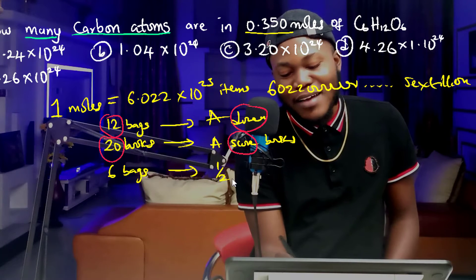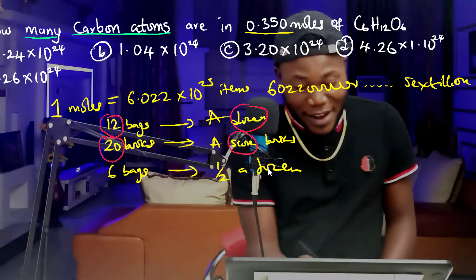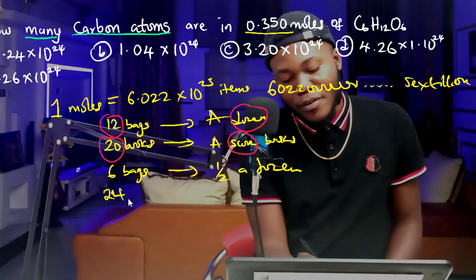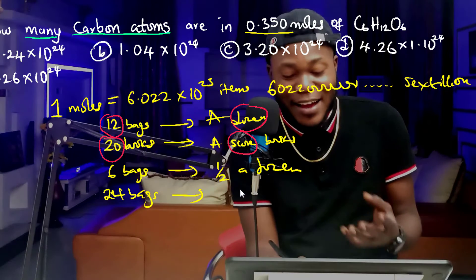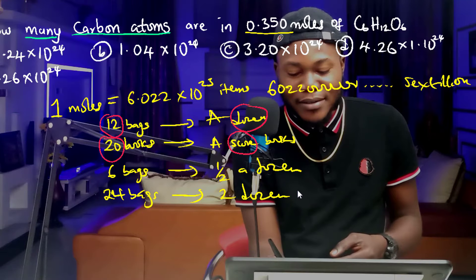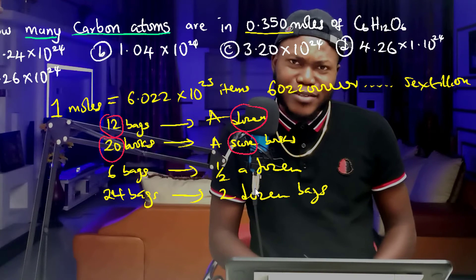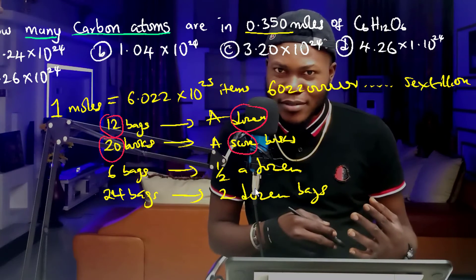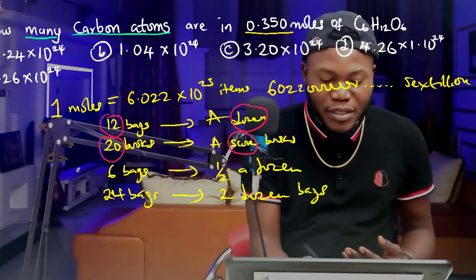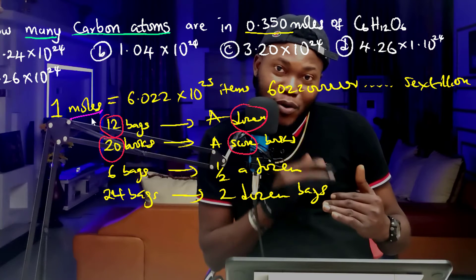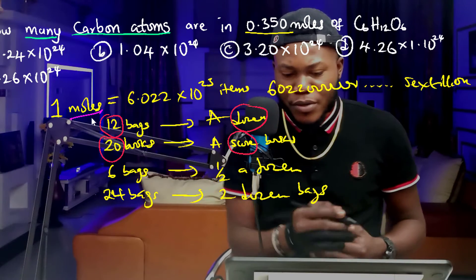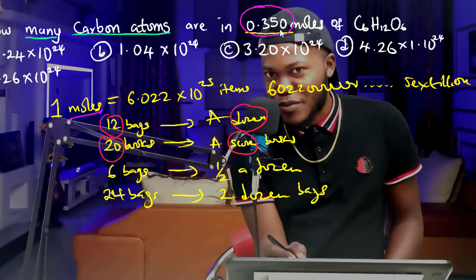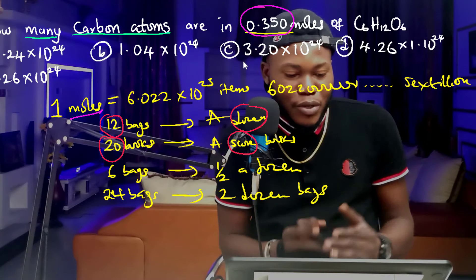If I have 6 bags I can say I have half a dozen. If I have 24 bags I have two dozen. So I can have more than a dozen, a fraction of a dozen, or multiples of a dozen. In the same way, I can have more than a mole or even less than a mole. In this case, 0.350 moles is a fraction of a mole, representing some number of particles.